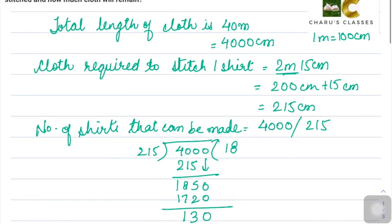The answer for this question is that basically 18 shirts can be made. They have also asked how much cloth will remain, so this remainder which is there, 130 centimeters of cloth will remain after making 18 shirts.